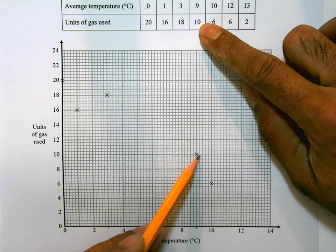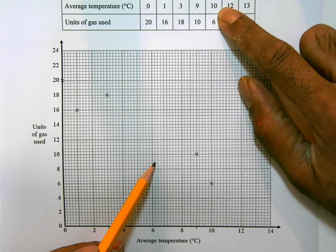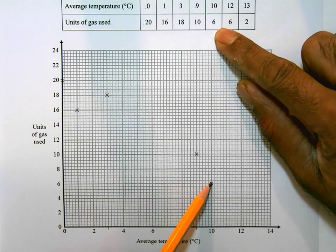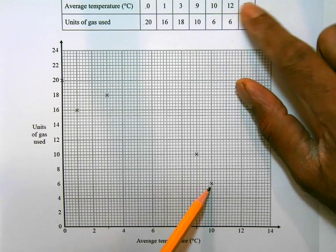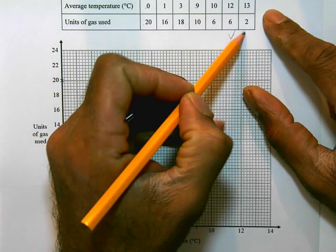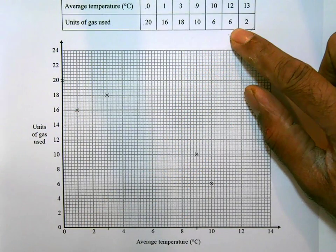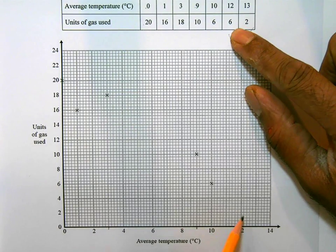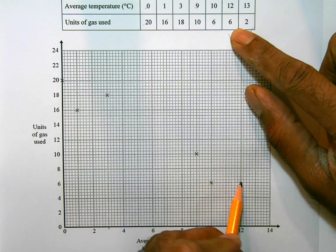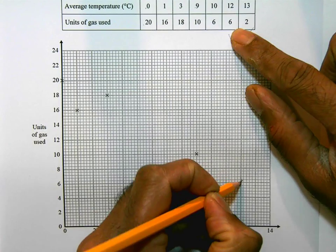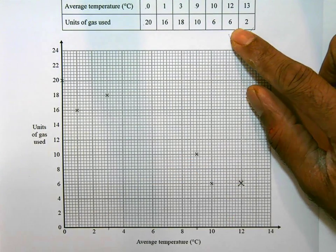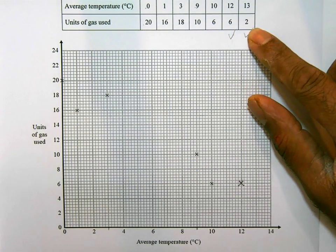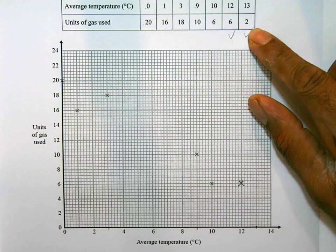12, 6. So 12 along and then 6 up. That's that point there, and I'm going to mark it with a cross just like they did. And then 13, 2. 13 is that value there between 12 and 14, and then 2 is over here. Okay, so that's the points plotted.